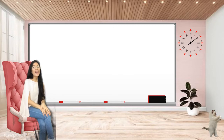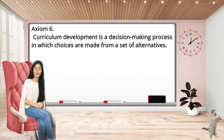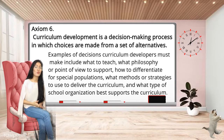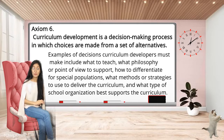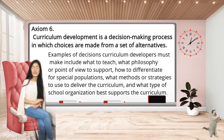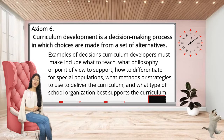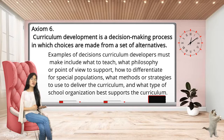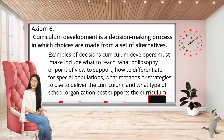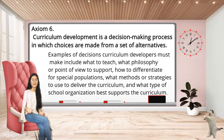Axiom 6 is basically a decision-making process. A curriculum designer needs to decide what contents to teach, the philosophy or point of view to support, how to differentiate for special populations, what methods or strategies to use to deliver the curriculum, and what type of school organization best supports the curriculum. For example, how are we going to group the students — by age or heterogeneously? The decisions for people with disabilities should also be considered: should they use special aids or have special programs? In axiom 6, you have to decide on the methods you are going to use.